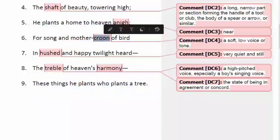What is croon? Croon is a soft, low voice or tone. Long, high, and dense trees can become a great habitat for various migratory birds.